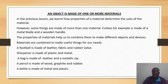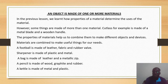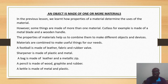Now we realize that some materials can be put together to make an object. We can use two or more materials to make a particular object. For example, a cutlass is made of metal for the blade and wood for the handle. The properties of materials help us combine them to make different objects and devices. Materials are combined to make useful things for our needs.